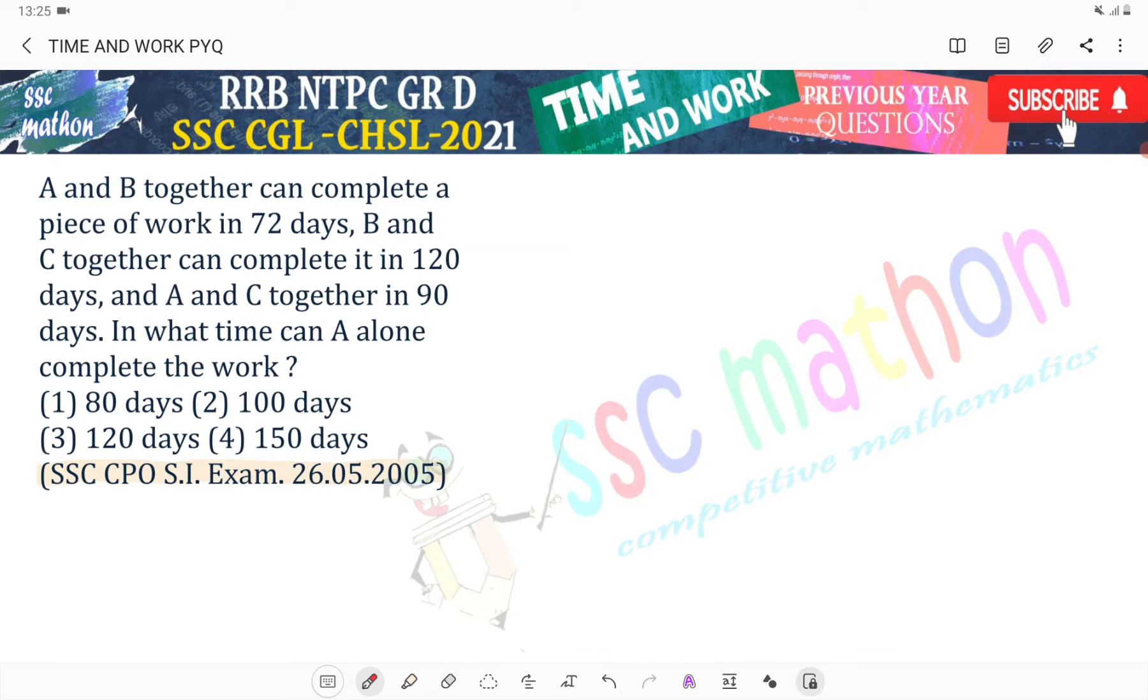Kya diya hai? A and B together can complete a piece of work in 72 days. B and C together can complete it in 120 days. And A and C together in 90 days. In what time can A alone complete the work?